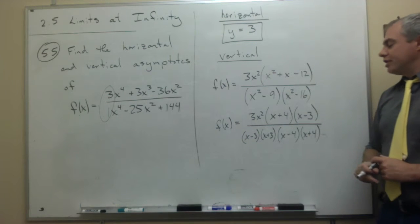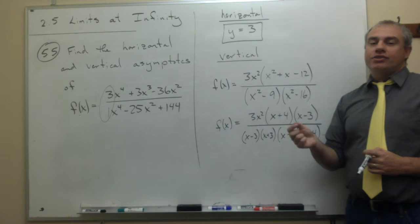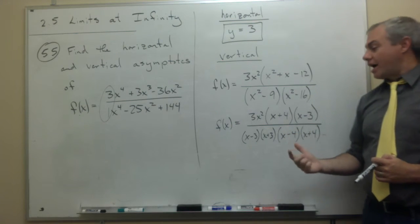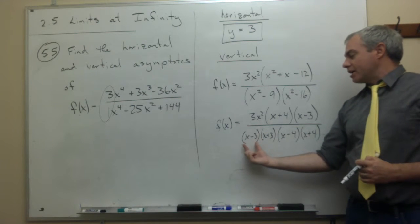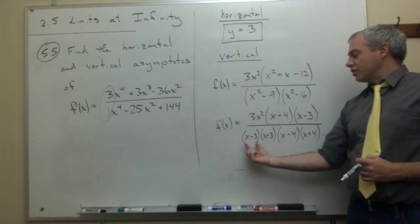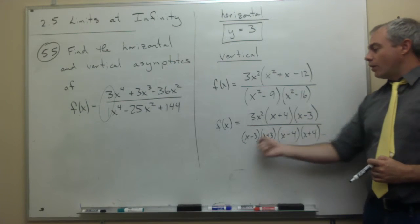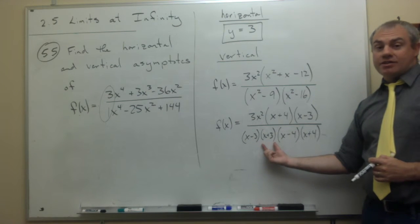And now the question is, what about the factors on the bottom? Let's look at each one individually and decide, is it a vertical asymptote or is it a hole in the graph? x minus 3, is there an x minus 3 on the top to cancel this guy out? Yes there is. So at 3, I have a hole in the graph. What about x plus 3?